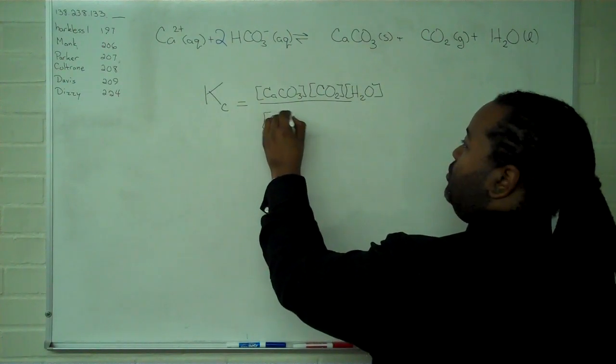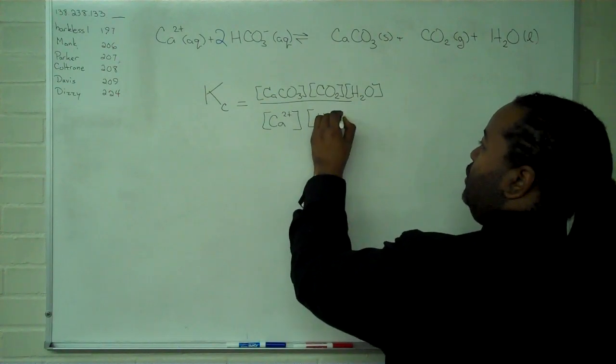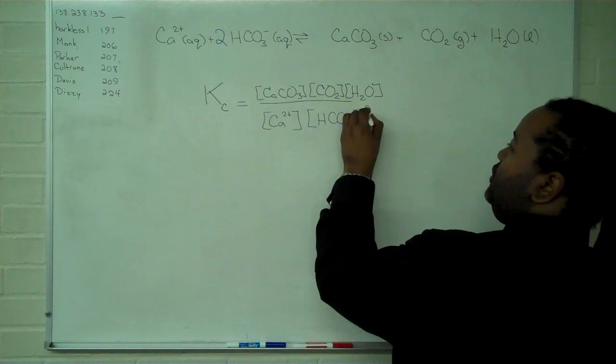And down on the bottom, we do the same thing. And we have to square this one because the stoichiometric coefficient is 2.